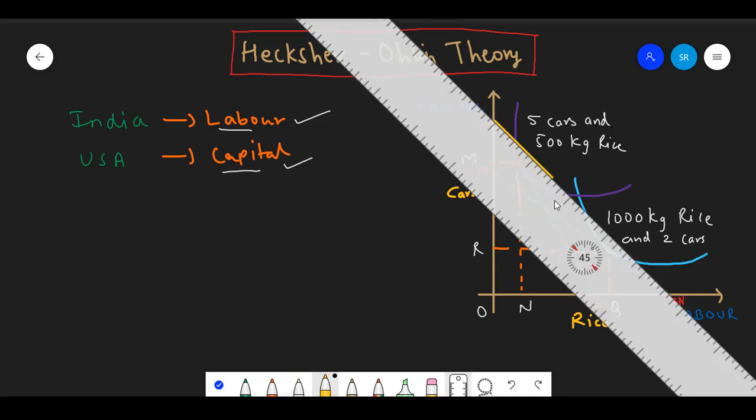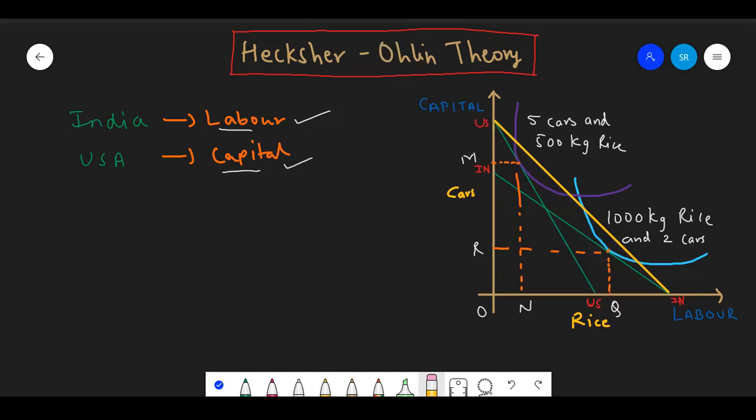This way, their factor price line will look like this, because both the countries will act like a single country when they completely depend on one another for the other commodity.